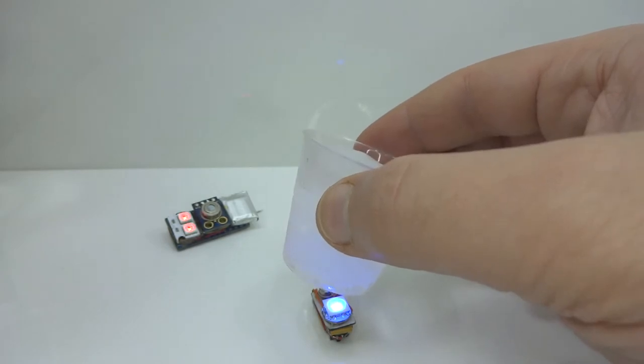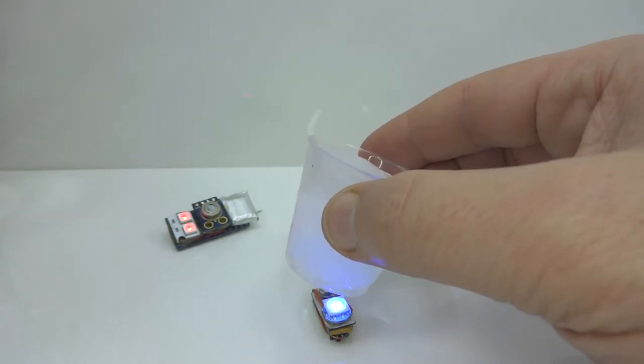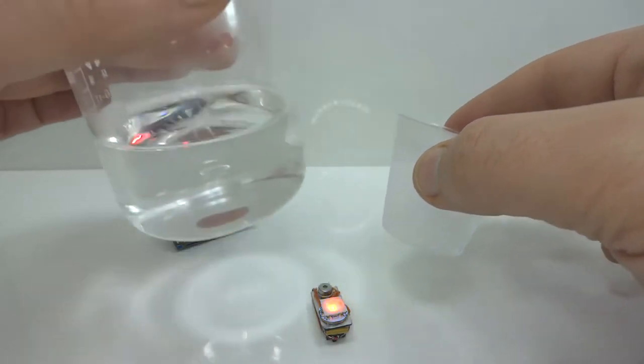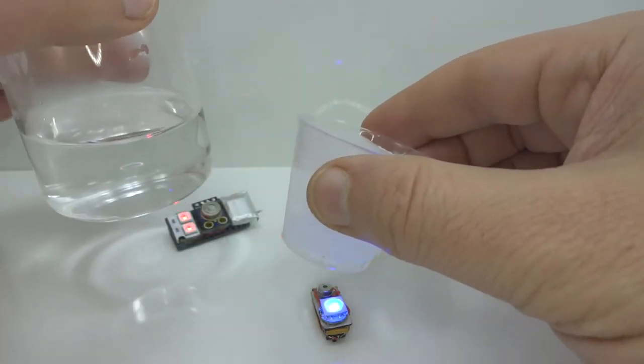If we were to think of this sensor as a single pixel, and made an array of them, we could construct a thermal image of a scene. Devices that do this are called thermal cameras.